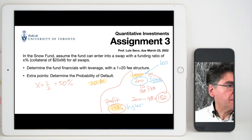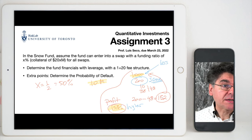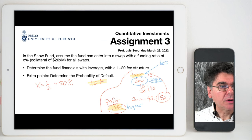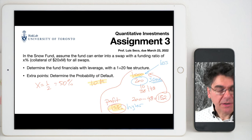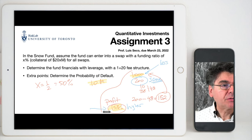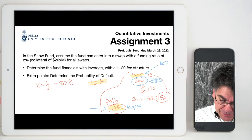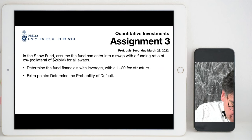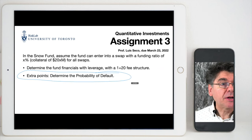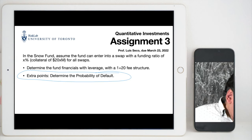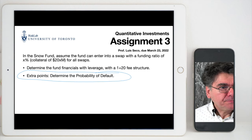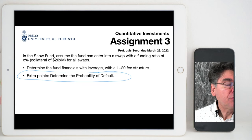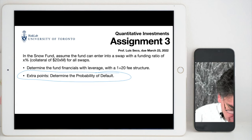This is an important assignment — it shows how leverage can increase performance. If you have difficulties or need more time, just tell me and I'll give you more time. There is also an extra credit question: determine the probability of default. That part is due before the end of the course, not on March 23rd, because some concepts we'll see later will be needed to complete it.